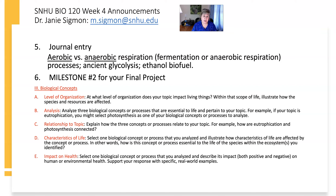So you've got your discussion board post, your journal entry, and you also have Milestone 2 for your final project. Here is an outline of what you need to include in Milestone 2. Under the guidelines and rubric for Milestone 2, you're supposed to make an outline — you don't have to write out everything, you need to put things in bullet form, but with enough detail so that I know you understand what will go into each section. This is section three of your final project: the biological processes.